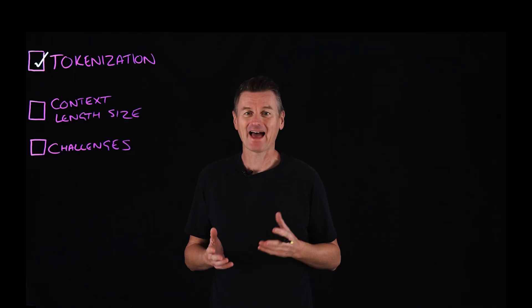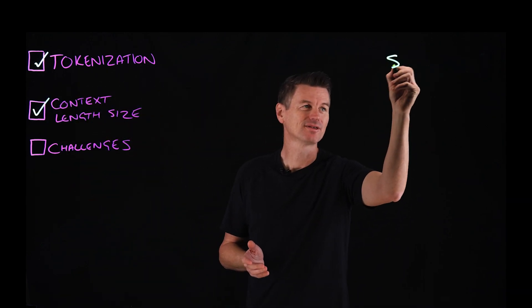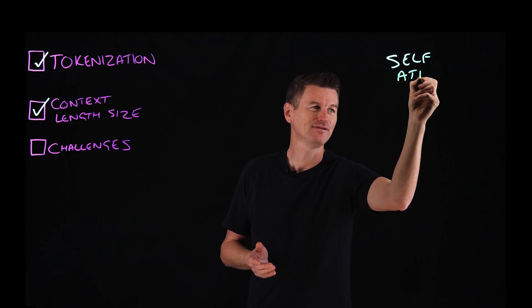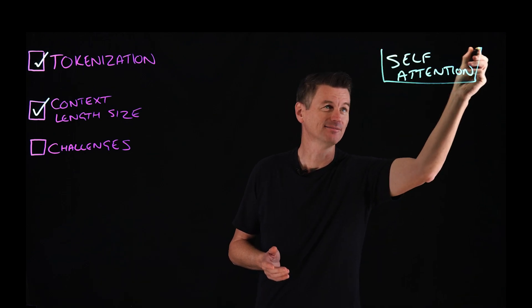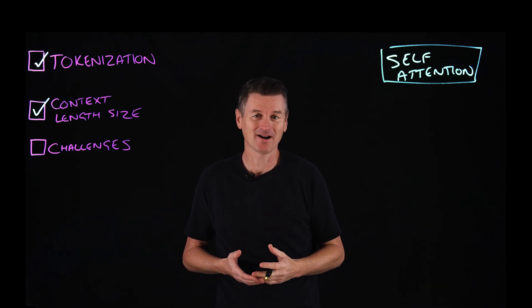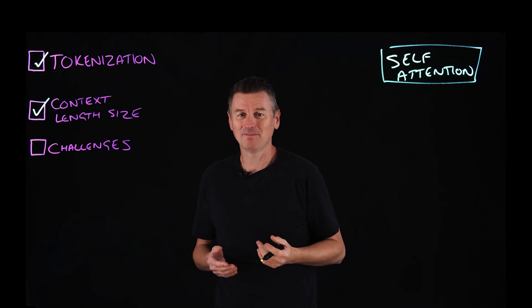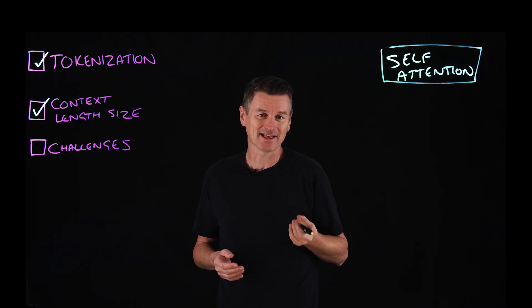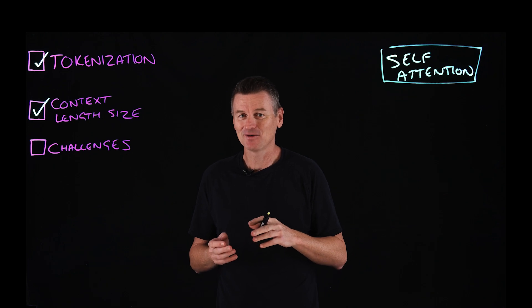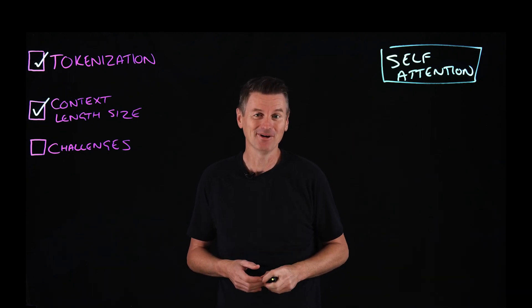So context windows consist of tokens, but how many tokens are we actually talking about? To answer that, we need to understand how LLMs process tokens in a context window. Transformer models use something called the self-attention mechanism, which is used to calculate the relationships and dependencies between different parts of an input, like words at the beginning and end of a paragraph. The self-attention mechanism computes vectors of weights where each weight represents how relevant that token is to the other tokens in the sequence. So the size of the context window determines the maximum number of tokens the model can pay attention to at any one time.